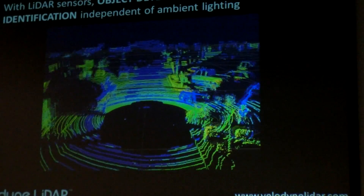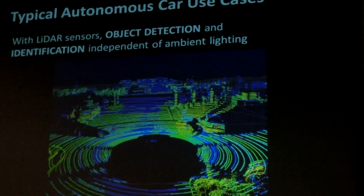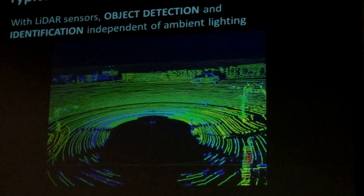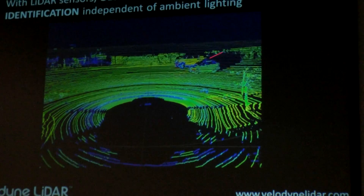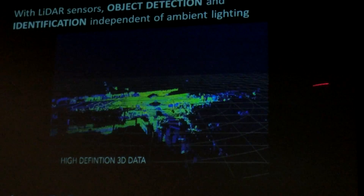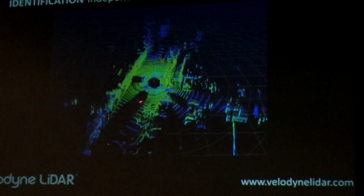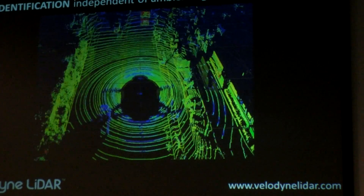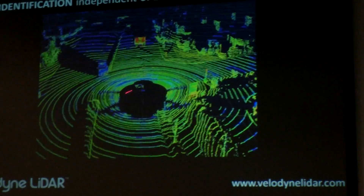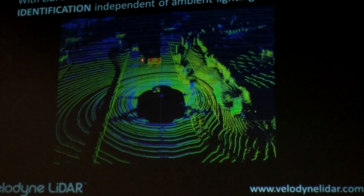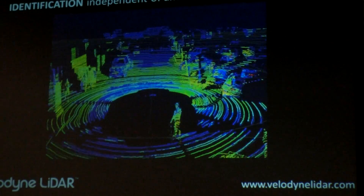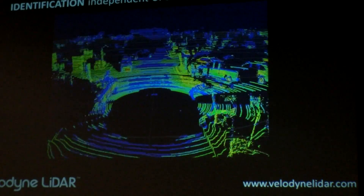Another beauty is that if you were driving at night, you don't really need ambient light because the sensor emits its own light, so you can use all this data to see these objects. We just produce the 3D point cloud data, but customers who get this data and run software on top of it can identify what's stationary and what's moving, and typically they can distinguish between cars and pedestrians.